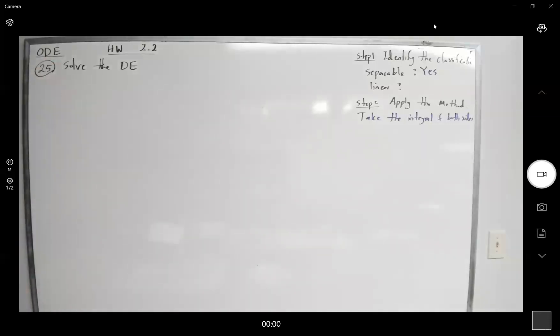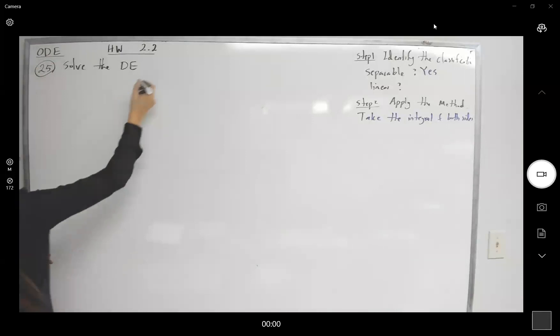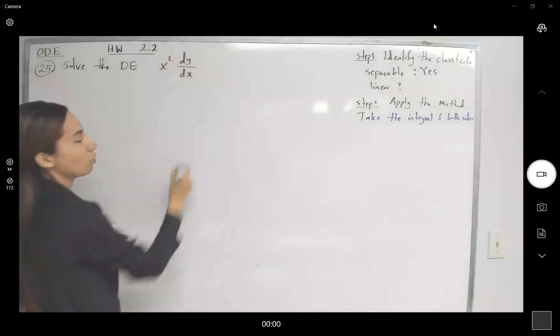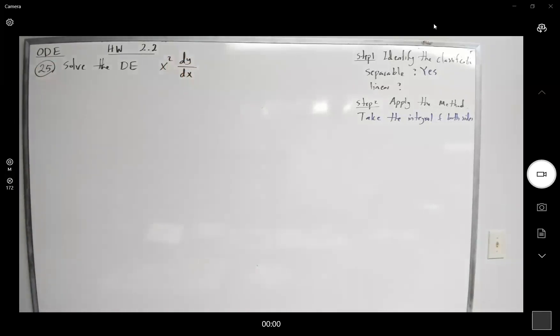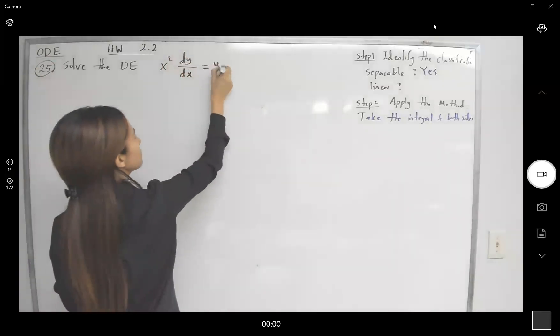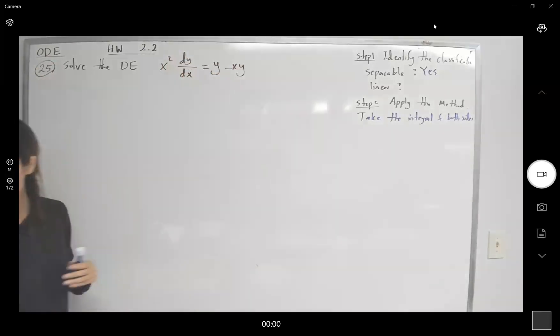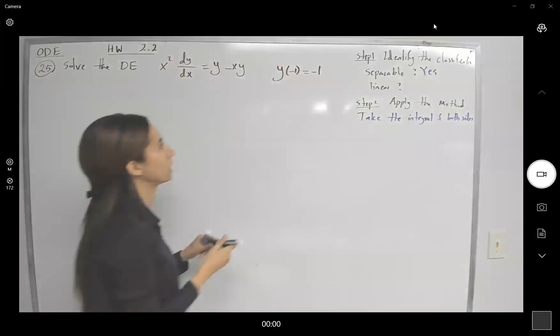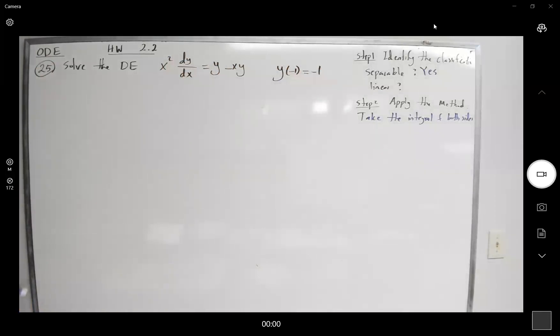The question says solve the following: x squared dy over dx equals y minus xy, and you have an initial value which is given as y at negative 1 equals negative 1.